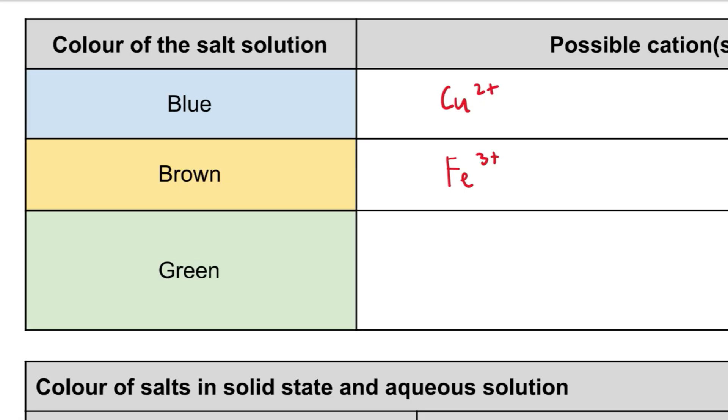If the color of the solution is green, there are a few possibilities: the Fe2+ ion, the Ni2+ ion, and the Cr3+ ion. As you can see, so far it is the transition metals that contribute the color of a salt solution — it is the cations that are responsible for the color.